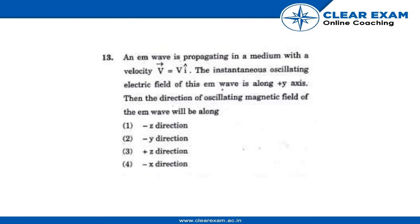Hello everyone, now we are going to do this question. An EM wave is propagating in a medium with a velocity V = Vi (where i is the unit vector). The instantaneous oscillating electric field of this EM wave is along the y-axis. Then the direction of the oscillating magnetic field of the EM wave will be along...